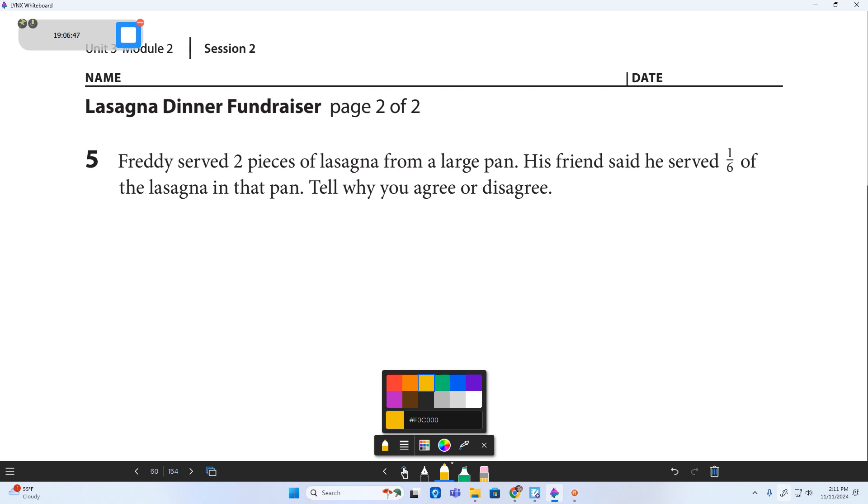Alright. Freddy served two pieces of lasagna from the large pan. His friend said he served one sixth. Do you agree or disagree? Dude, we need a picture. Alright. I'm going to draw that large pan. Remember that it was like a three by four. Okay. So here's our large pan. Three across the side, four across the top. And it said Freddy served two pieces of lasagna. So let's go ahead and shade two pieces.